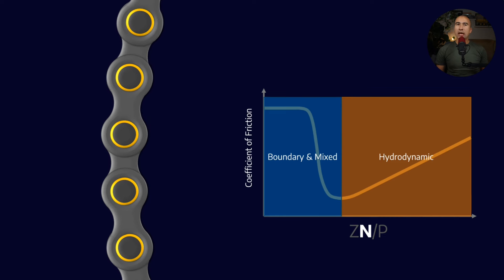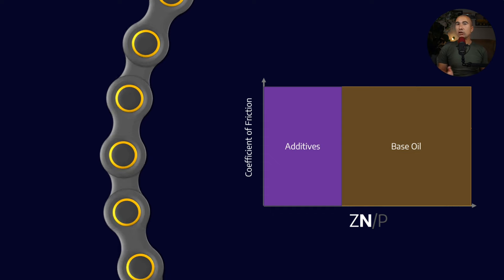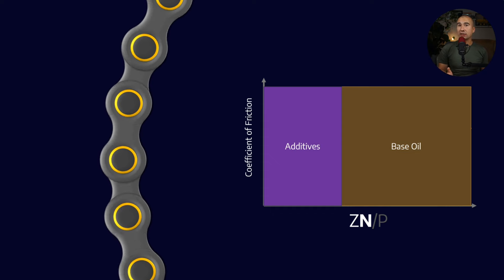So what we generally say is, because there's so little rotation, we are spending almost all of our time in the boundary and the mixed lubrication regimes. And we know that those are tended to be dominated by the performance of the additives.